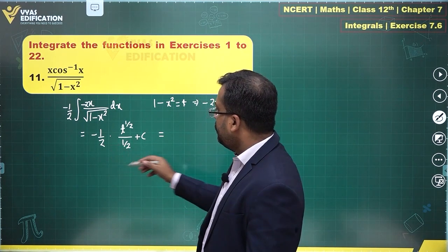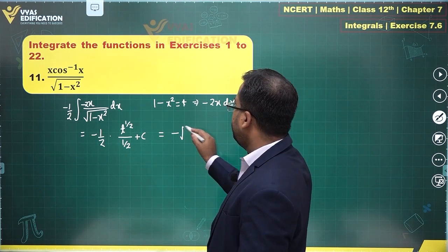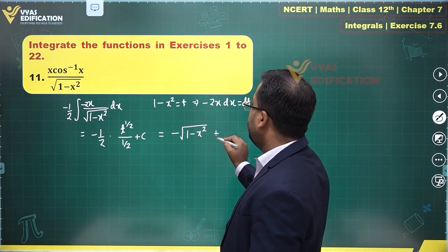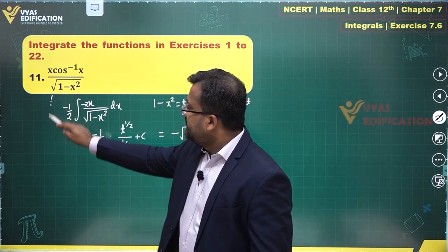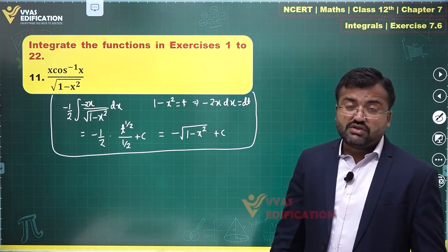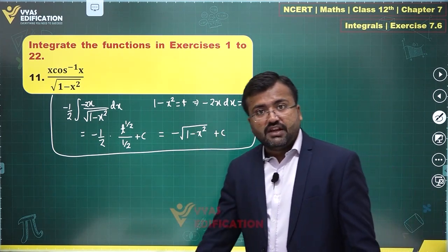What is that equal to? So this 2 goes minus square root of t, which is 1 minus x square plus constant is what I get. So this is what the integral of x upon root of 1 minus x square looks like. This is what you'll get.